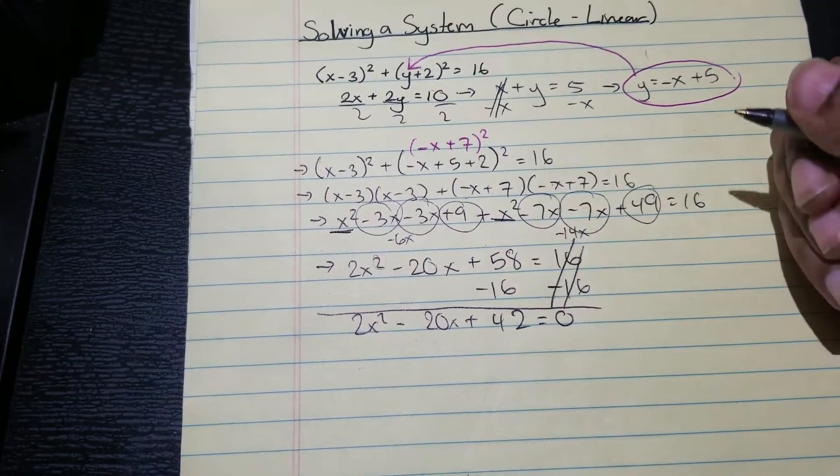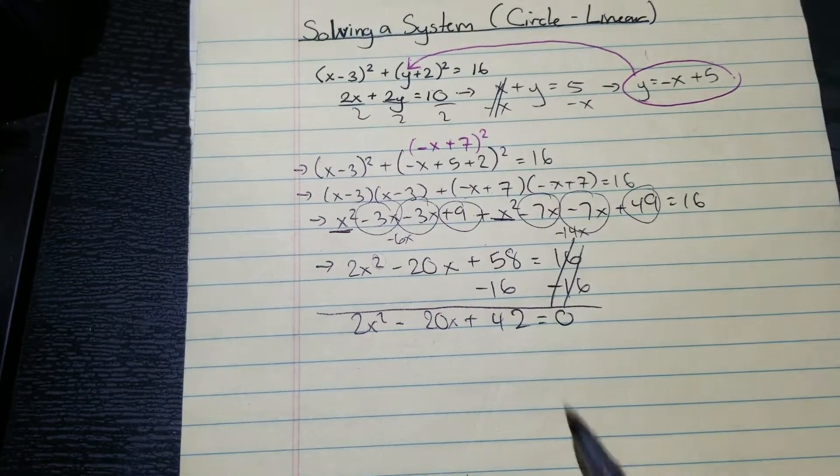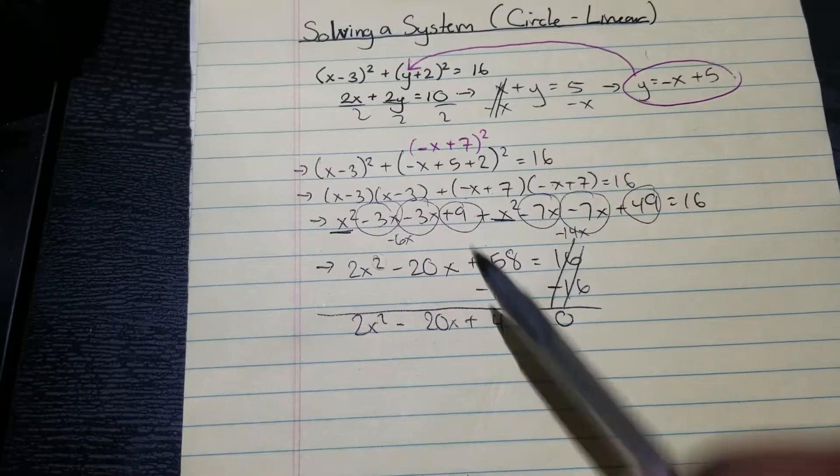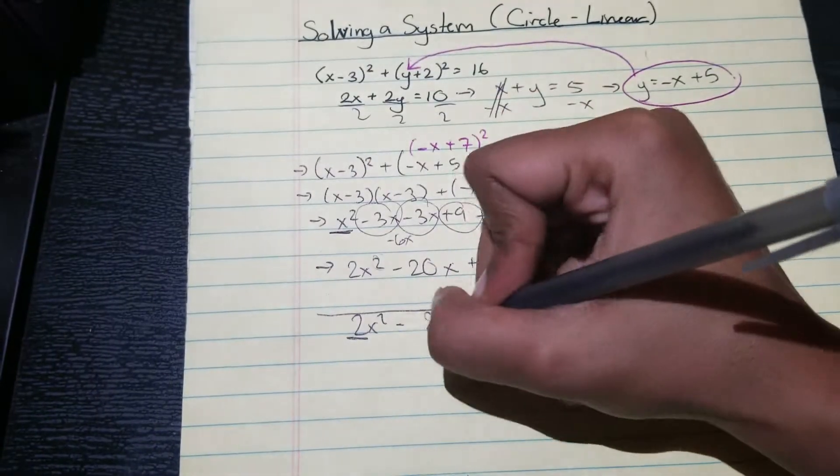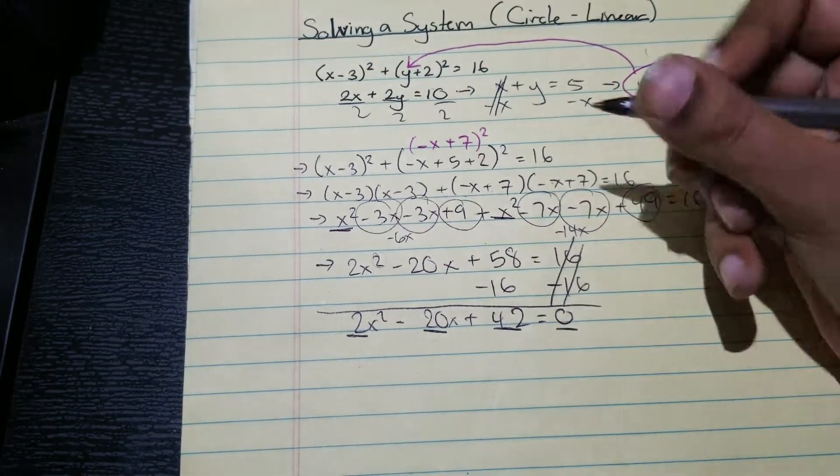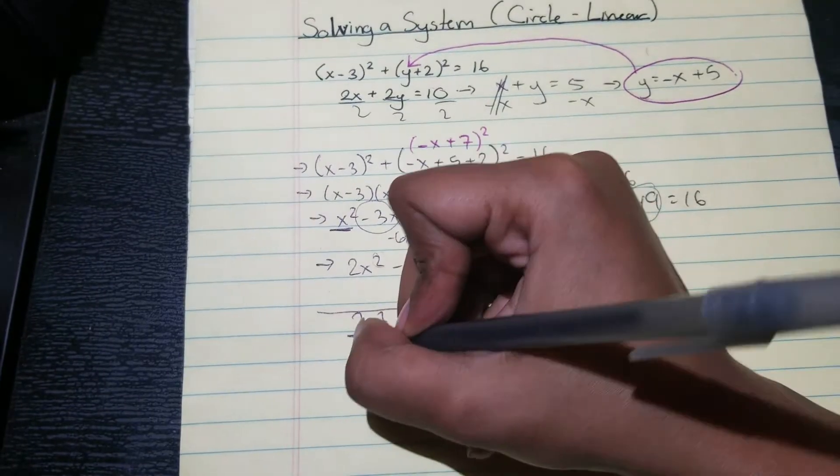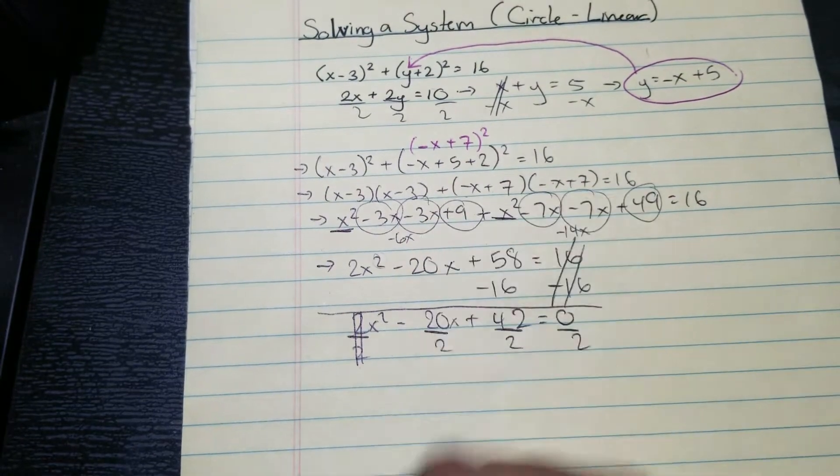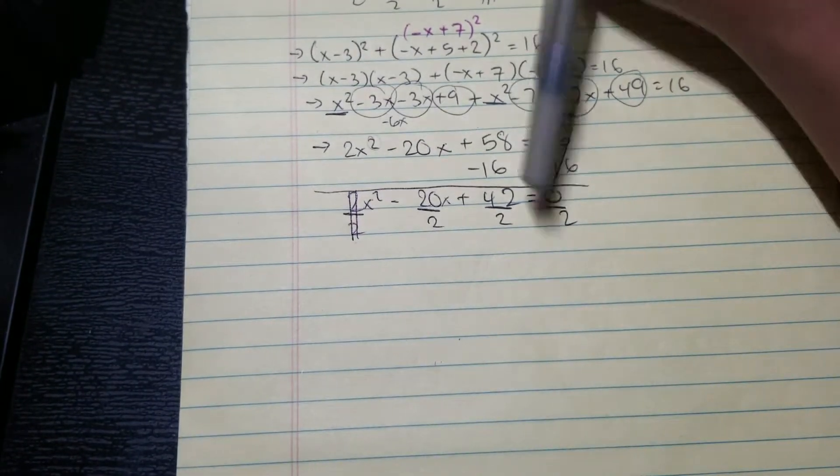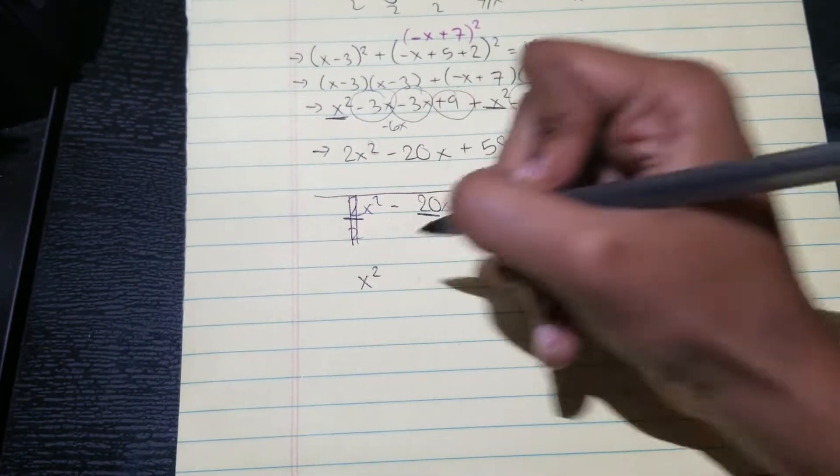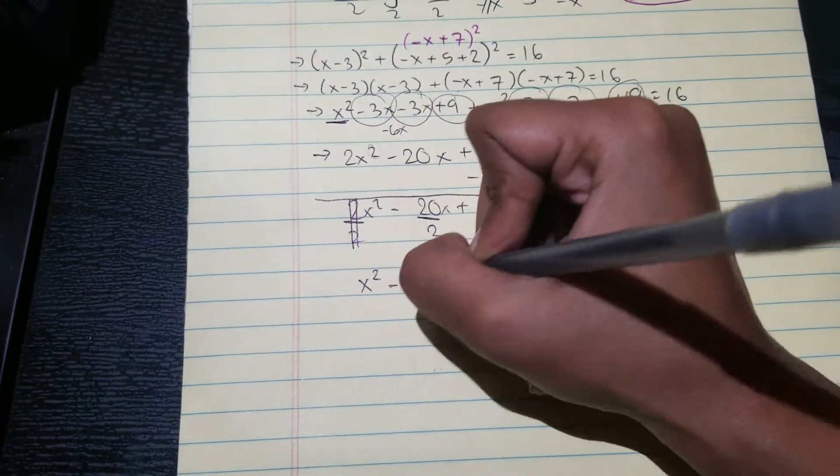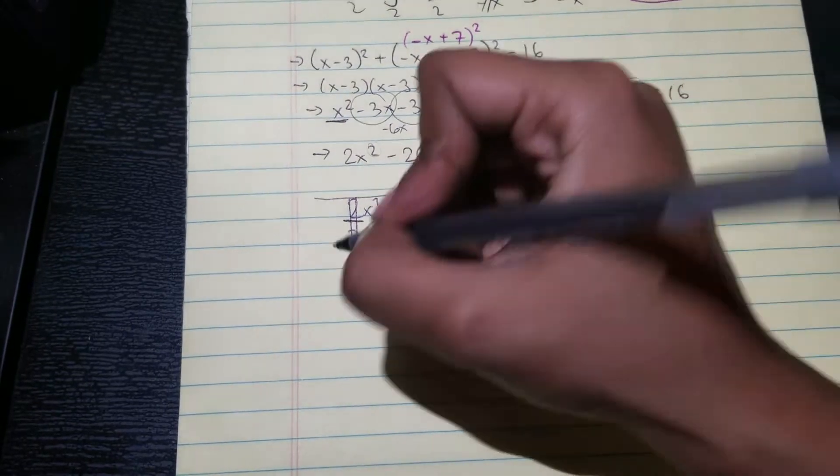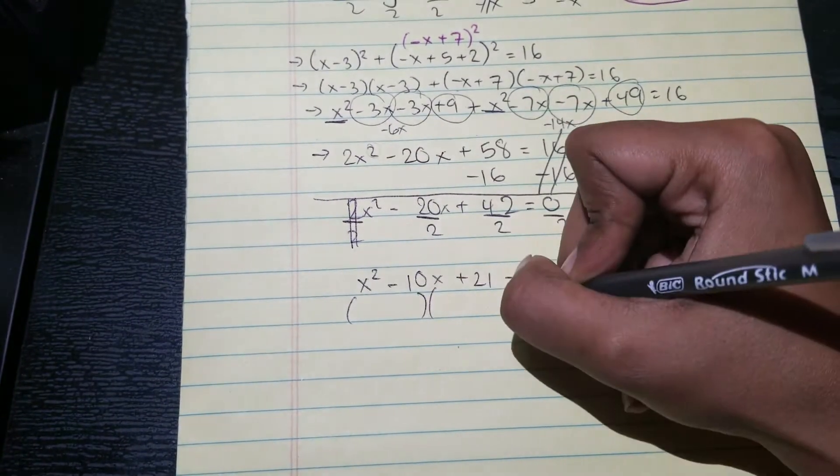Okay, something that you want to keep in mind: if you see that your coefficients are even, you want to try and simplify them because that'll allow you to work with simpler numbers. So I see that they're all divisible by two, so I'm going to do just that, divide everything by two. And then I end up with x squared minus 10 x plus 21 equals zero. And now I need to factor.